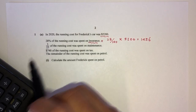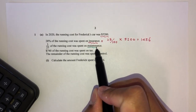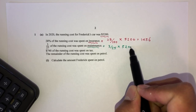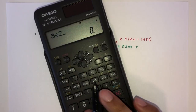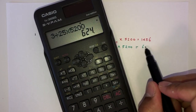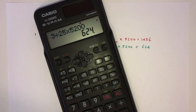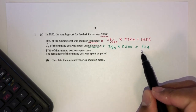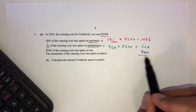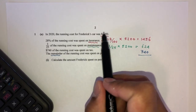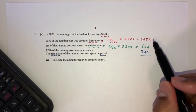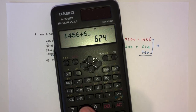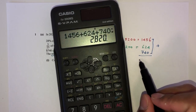Next, 3/25 of the cost was spent on maintenance, so 3/25 times 5200 — that's 3 divided by 25 times 5200, which gives 624. And 740 was spent on tax. So let's find the sum of all these known costs: 1456 plus 624 plus 740 gives 2820.